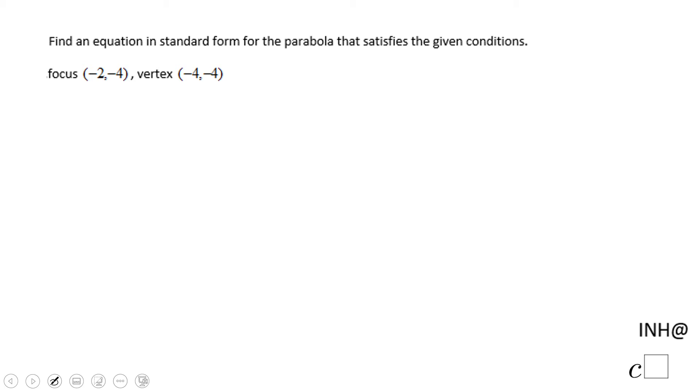Welcome or welcome back and I need help at C squared. In this example, we're going to look for an equation of a parabola that has the focus of negative 2 and negative 4, the vertex at negative 4 and negative 4.